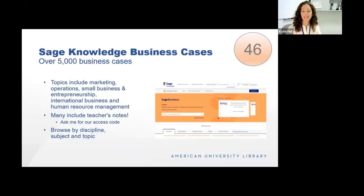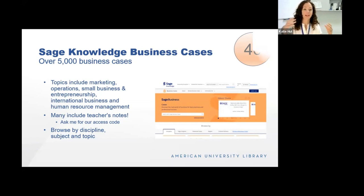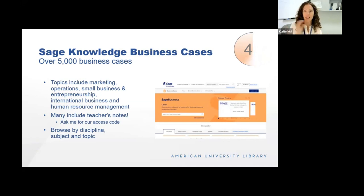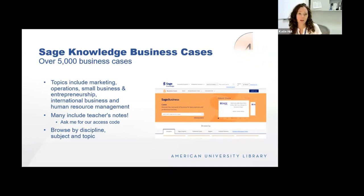SAGE Business Cases are another resource I really like to tout. I get a lot of requests for Harvard Business Press business cases — we have access to some, but not many, and they tend to not be super current. But when I direct faculty to SAGE, they're usually quite happy with it as a substitute. SAGE provides over 5,000 business cases in a really wide range of topics, and they also include teacher's notes. They're quite topical, really current, and a great resource if you're looking for business cases.